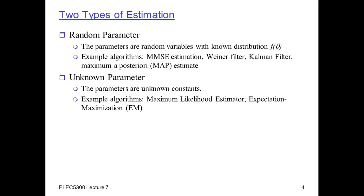In other cases, we might want to remain completely agnostic about what we think the parameters might be. We'll assume there are some unknown constants and we have no idea what they are — they could be anything. In that case, we're going to completely trust the data, because we have no prior assumptions about what reasonable values the parameters might be. Example algorithms for this are the maximum likelihood estimator, and the EM algorithm, which is an implementation of the maximum likelihood estimator, though we won't cover that in this class. We'll focus on the maximum likelihood estimator.